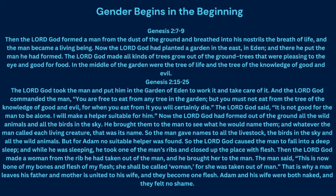The Lord God said, 'It is not good for the man to be alone. I will make a helper suitable for him.' Now the Lord God had formed out of the ground all the wild animals and all the birds in the sky. He brought them to the man to see what he would name them. But for Adam, no suitable helper was found. So the Lord God caused the man to fall into a deep sleep, and while he was sleeping, he took one of the man's ribs and made a woman from it, and brought her to the man. The man said, 'This is bone of my bones and flesh of my flesh. She shall be called woman, for she was taken out of man. That is why a man leaves his father and mother and is united to his wife, and they become one flesh.' Adam and his wife were both naked, and they felt no shame.